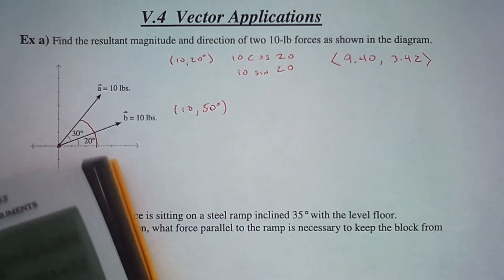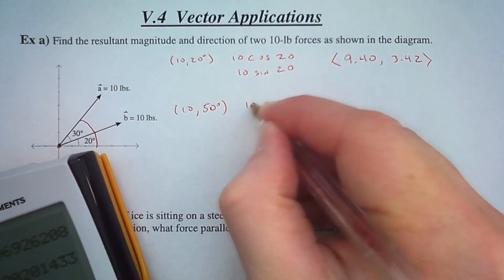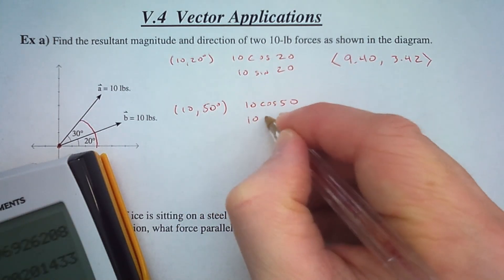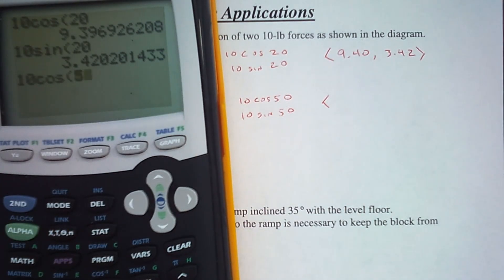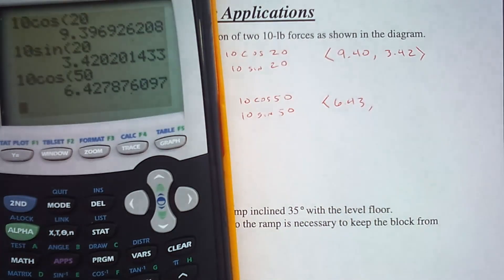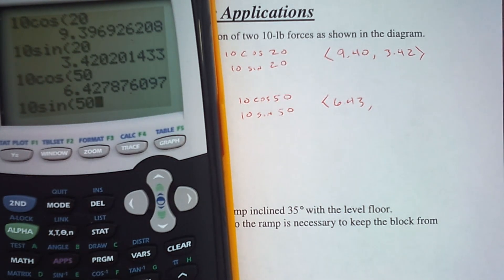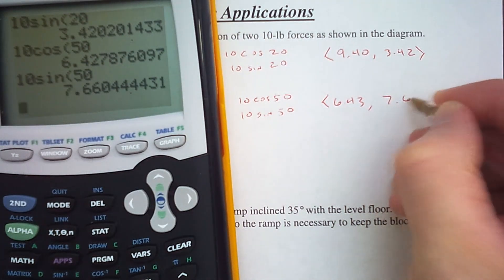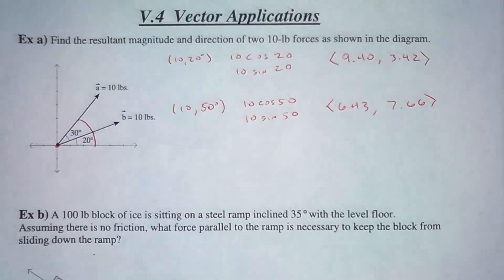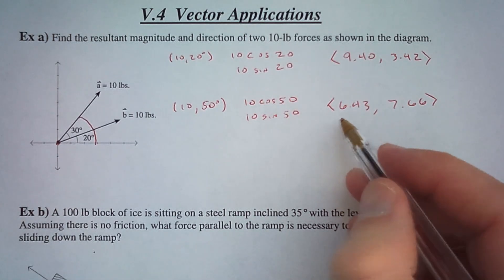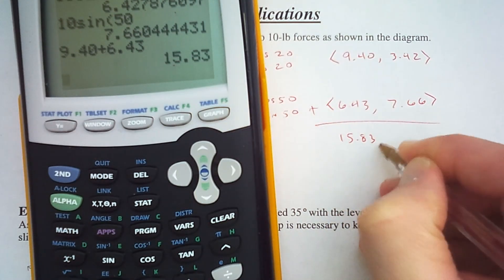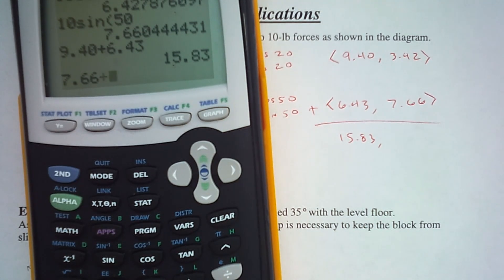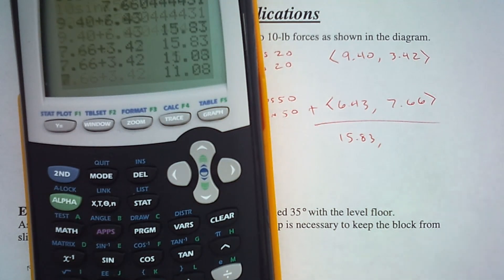There is our first vector in component form. Then we will do the same for the second vector: 10 cosine 50 and 10 sine 50. 10 cosine 50 is 6.43 and 10 sine 50 is 7.66. Now we can add these two together. We have 9.40 plus 6.43 equals 15.83, and 7.66 plus 3.42 equals 11.08.